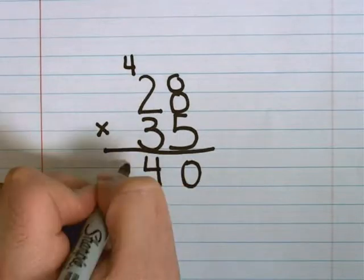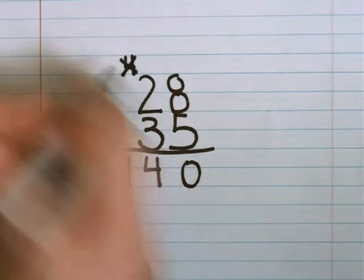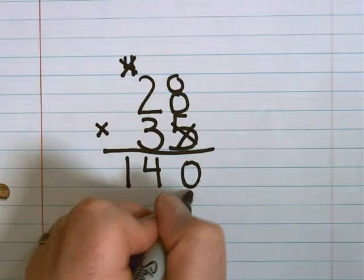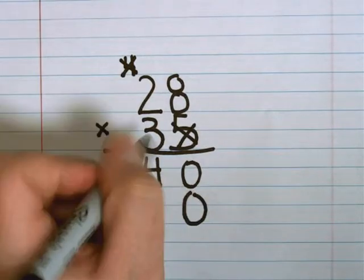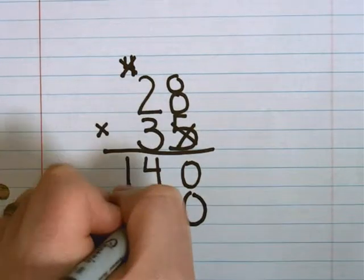5 multiplied by 2 is 10. Add the 4 more is 14. I'm done with both of those, so I'll cross them out. Add a 0 for the placeholder.